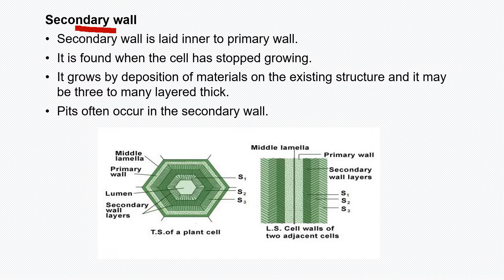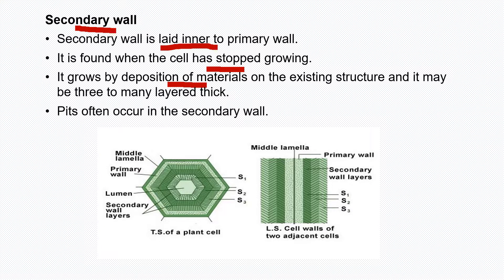Secondary wall is laid inner to the primary wall and it is found when the cell has stopped growing. It grows by deposition of materials on the existing structures and it may be three to many layers thick. Pits are generally present in the secondary wall and they are used for communication as well as intracellular transportation. Now let us start to observe from the diagram what we have discussed.